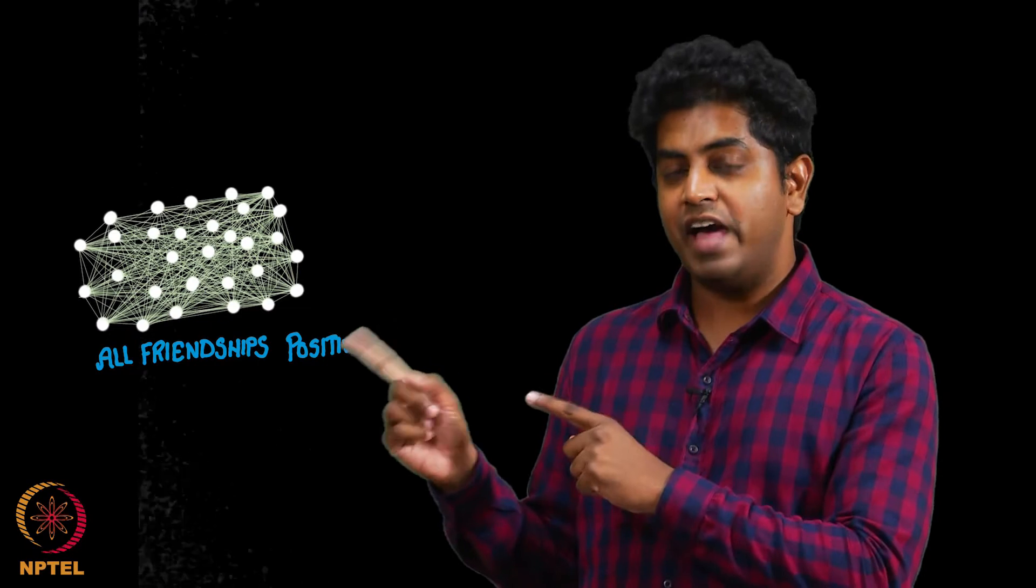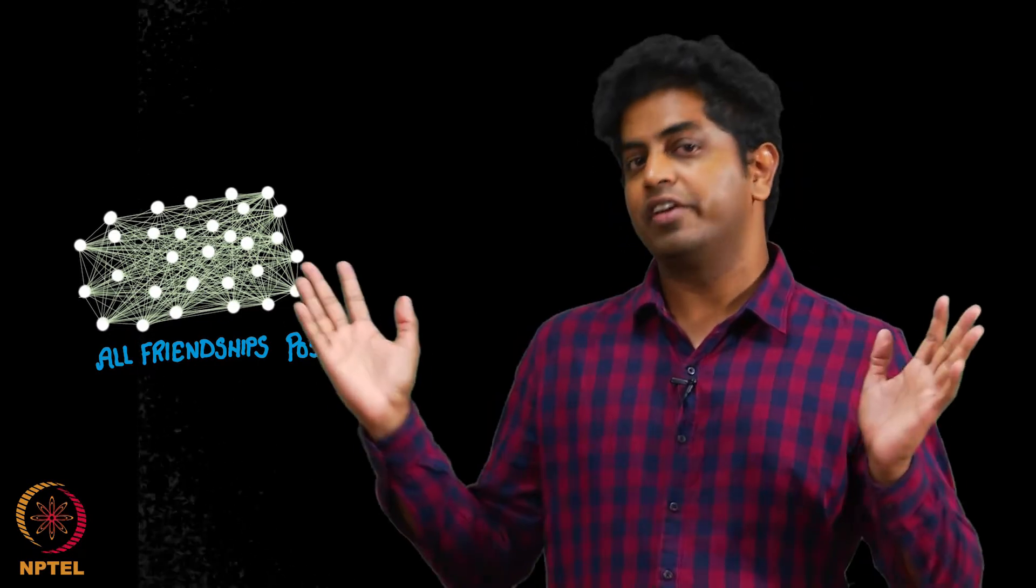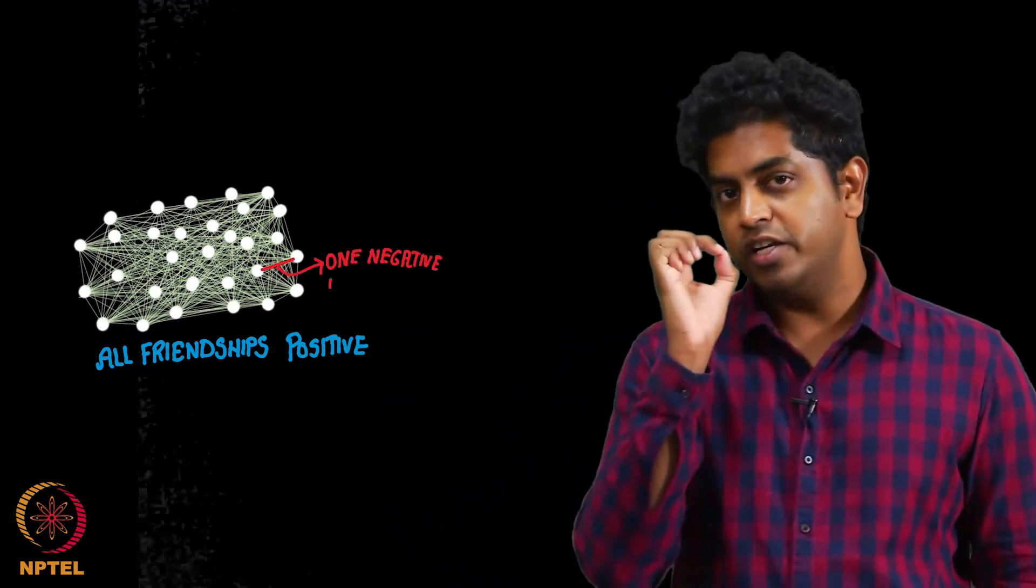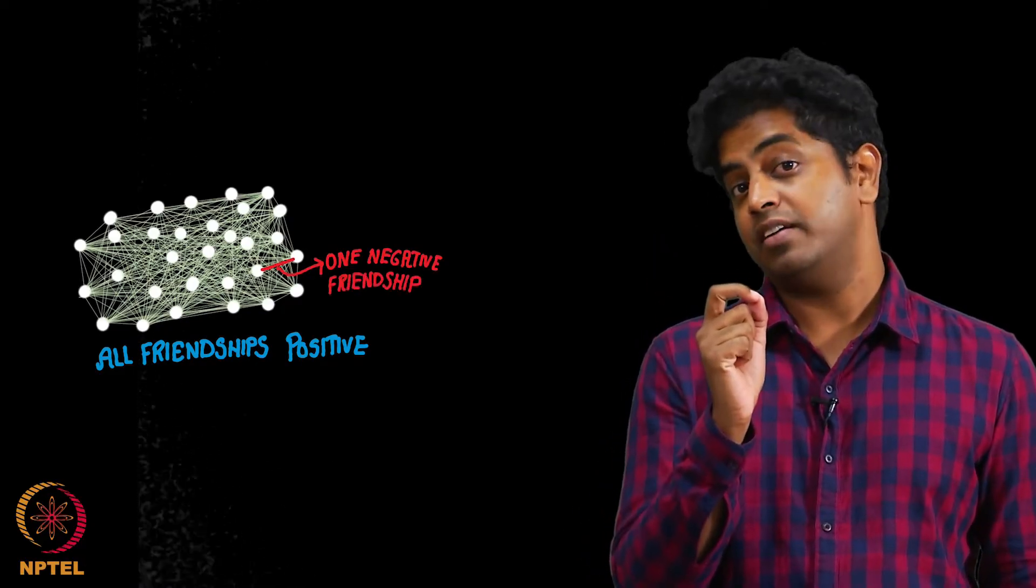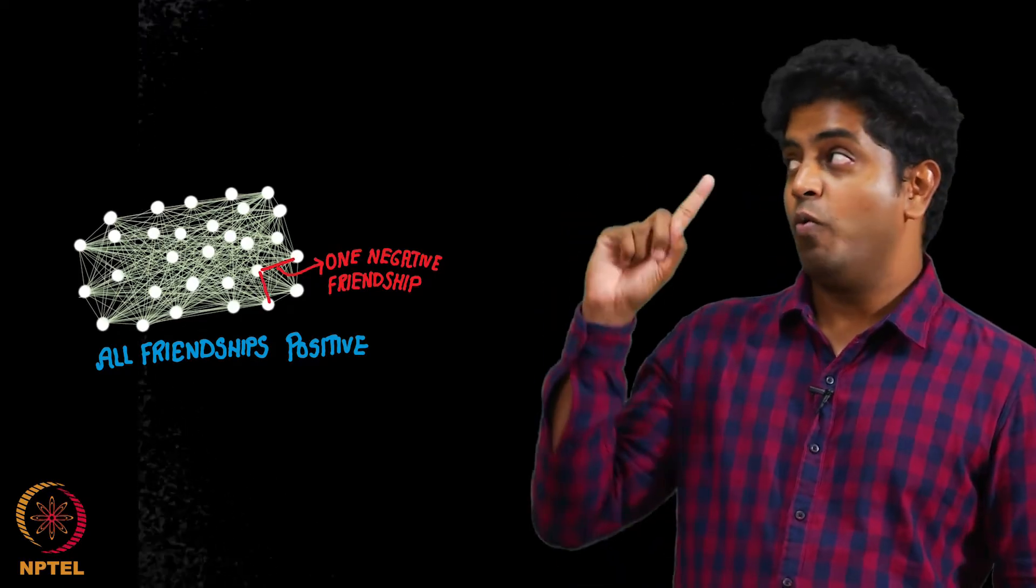Given this kind of a happy world with all relationships being positive, just try introducing one negative friendship. What will that result in? Observe, one negative friendship will result in a triad around it, at least one triad, one triangle.